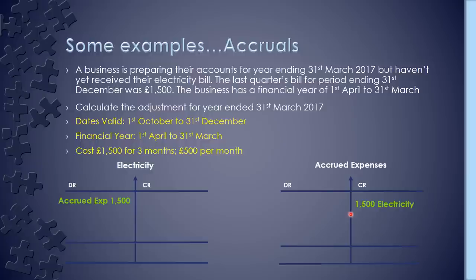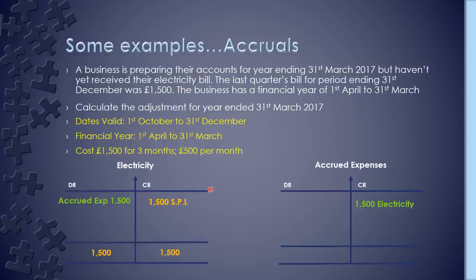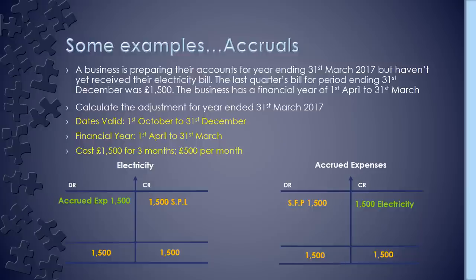Closing off the accounts: the electricity account balancing figure of £1,500 goes to the Statement of Profit and Loss as a debit adjustment. The accrued expenses account of £1,500 is then credited into the Statement of Financial Position as a liability — we'll need to make sure we have enough to cover it when the bill eventually comes in, so it's a credit as a liability.